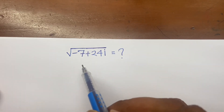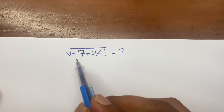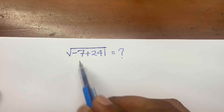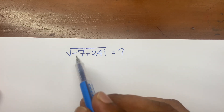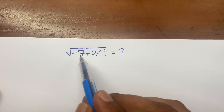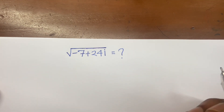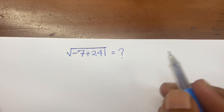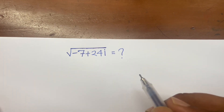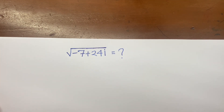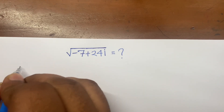Hello everyone, I hope everybody is well. Today I solve this square root problem: square root of minus 7 plus 24 iota. I solve this question by two methods, so first method.